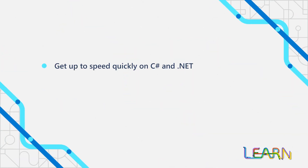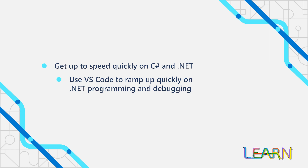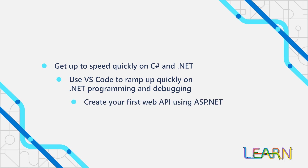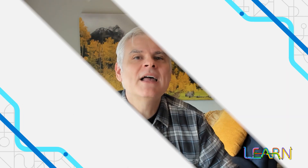After writing your first lines of C-sharp, you'll then learn about .NET, how to build C-sharp apps in Visual Studio Code, including how to create new projects, how to work with dependencies, and how to debug remotely using the Visual Studio Code debugger. And even by the end of this learning path, you'll have created your first web API using ASP.NET.